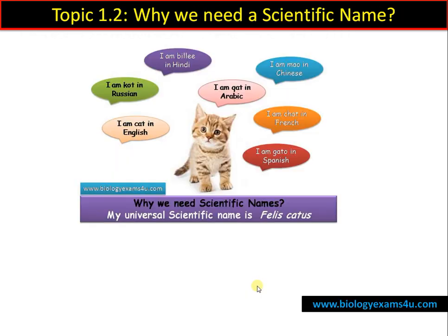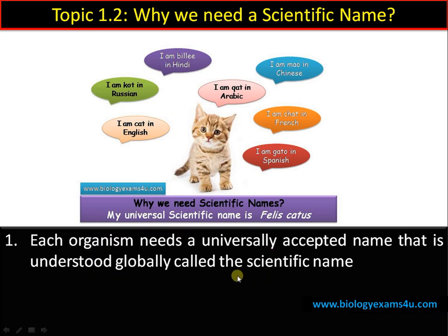Why do we need a scientific name? Take this image of a cat. In Arabic it is called 'Qitt', in Chinese it is 'Māo', in Hindi it is 'Billi', in English it is 'cat', in Russian it is 'Kot'. The same organism is called by different names in different countries — and even within a country, regions may use different names. This creates a problem in identifying the organism universally. The scientific name is a universal name known to everyone around the globe. The scientific name of a cat is Felis catus, known to all biologists worldwide.